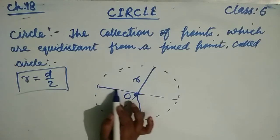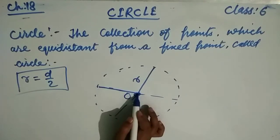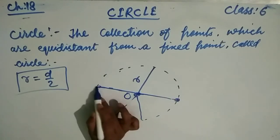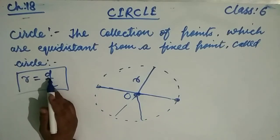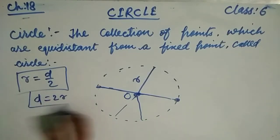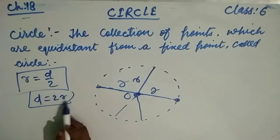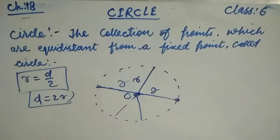The diameter d is a line segment passing through the center of the circle whose endpoints lie on the circle. The diameter is equal to two times the radius. Here r plus r equals 2r, so twice the radius is called the diameter of the circle.